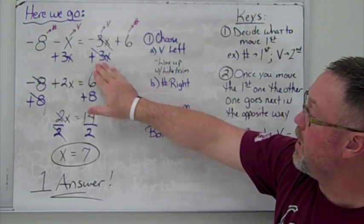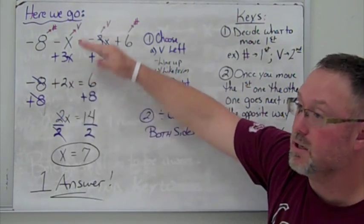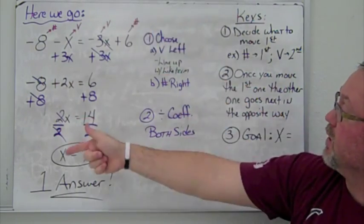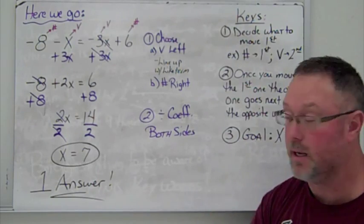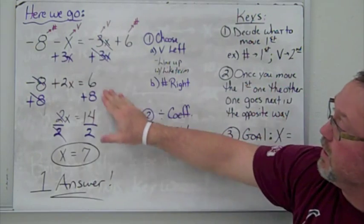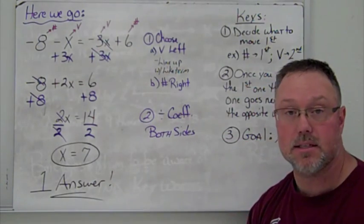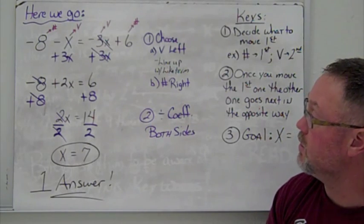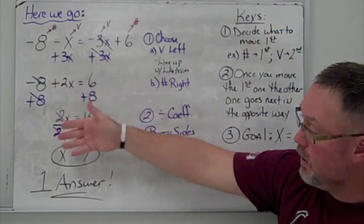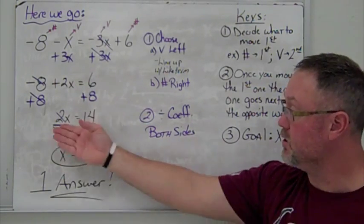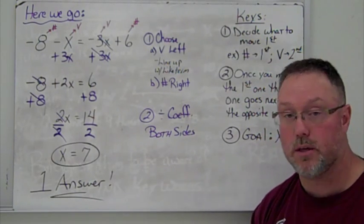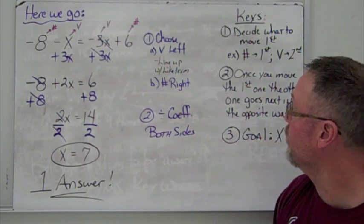We move it by adding positive 3x to both sides, then simplify. Because we moved the variable to the left, the number has to go to the right. So we move our positive 8 to the right-hand side using the opposite operation, leaving us with 2x = 14. Dividing by 2 gives x = 7 — this one has exactly one solution.